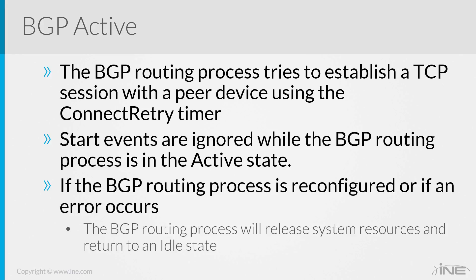If one side is configured but they're not configured to match or have the correct information, you have to be careful because you'll run into situations where you'll be peering out the wrong interface, the wrong IP address, or setting it up the improper way. The TTL value will be wrong. Things have to match in order for this to come up, which makes BGP almost as finicky as OSPF — not quite as bad, but almost.